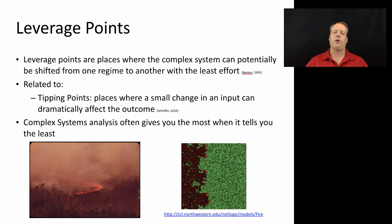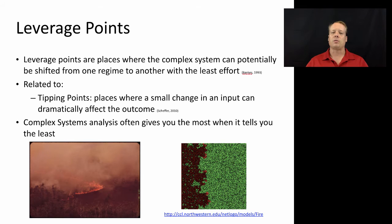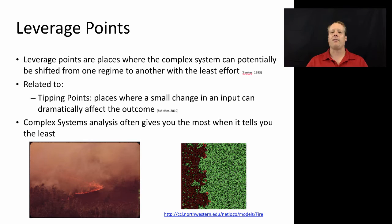A lot of times what you want to do is identify places where small changes in the input can dramatically affect what's going on. One of my colleagues, Scott Page, used to often say that complex systems analysis often gives you the most when it tells you the least. The reason he said that was because if the system is showing you that there are many different ways the system can go, then you know that inputting just a small amount in one direction or another can really lever the system the way you want.